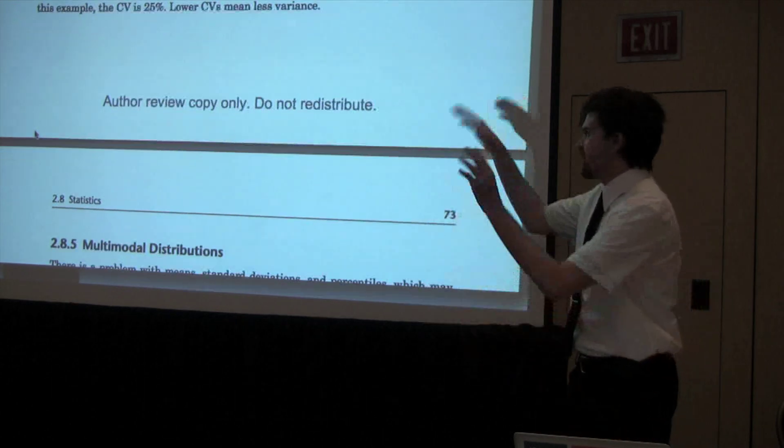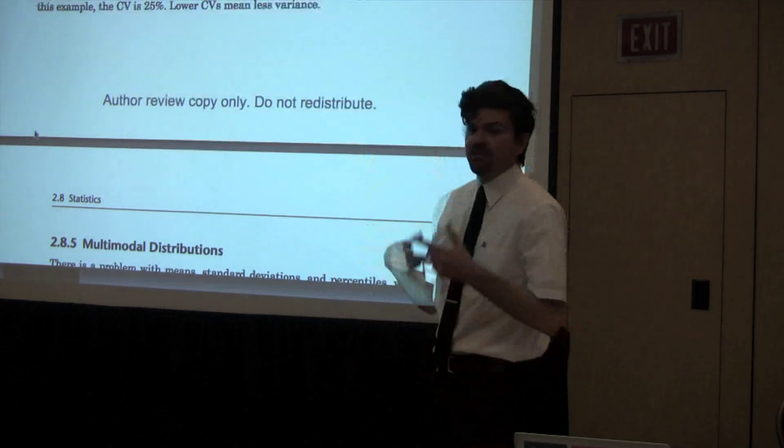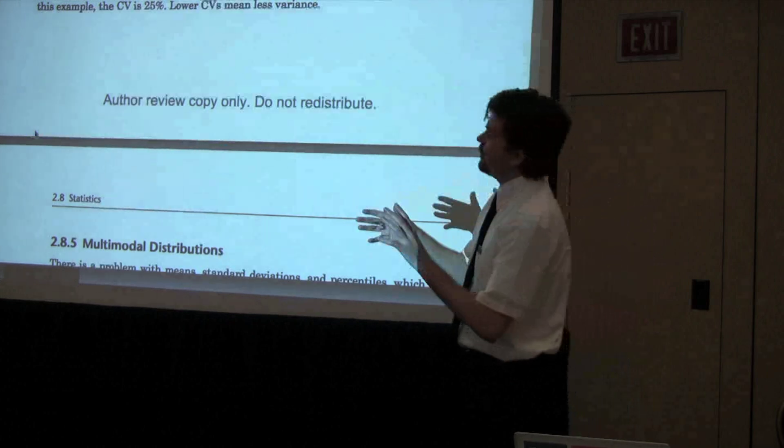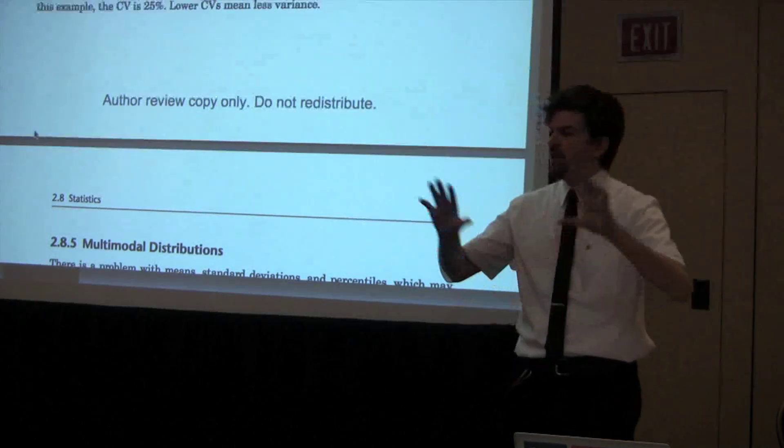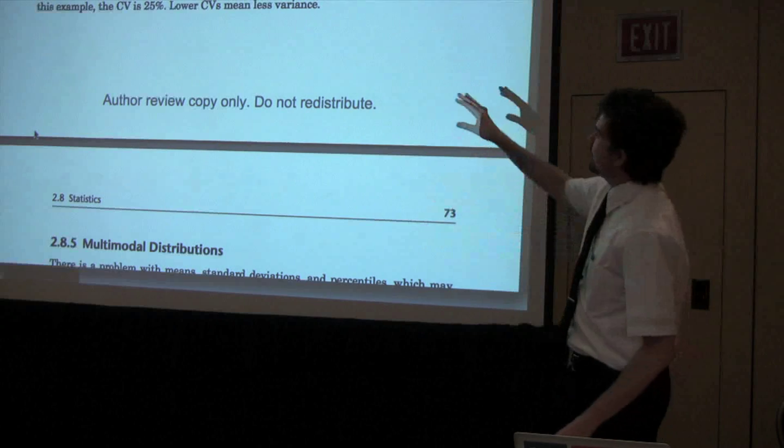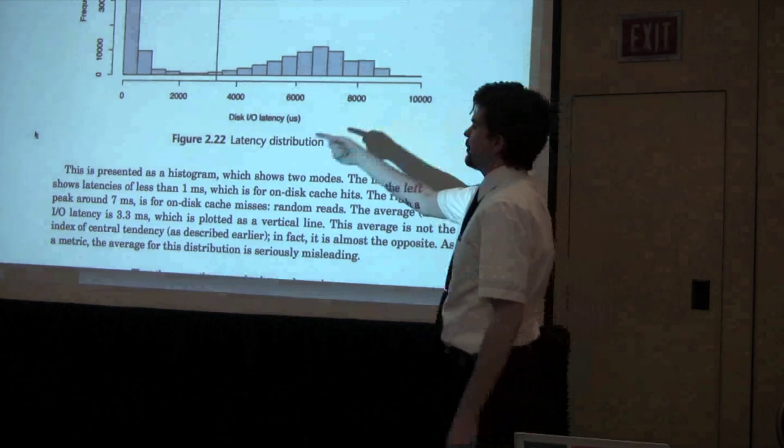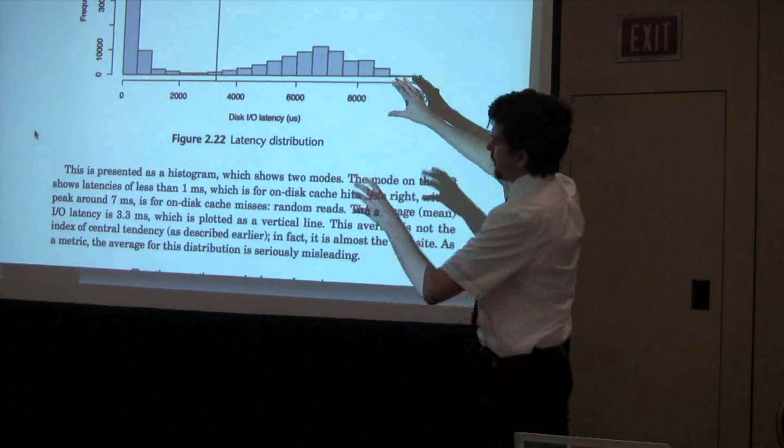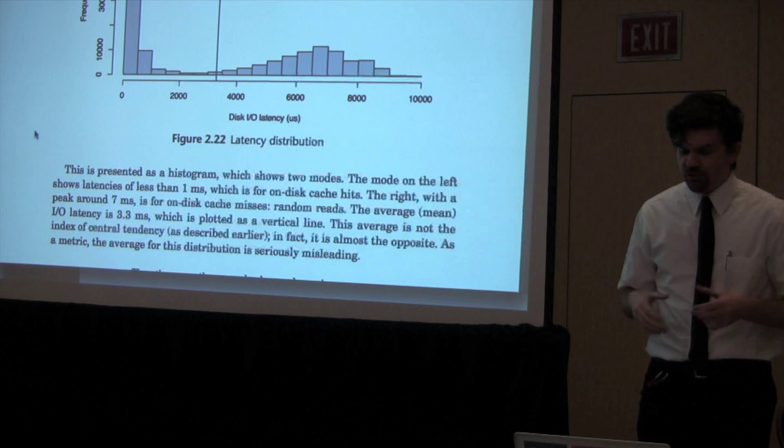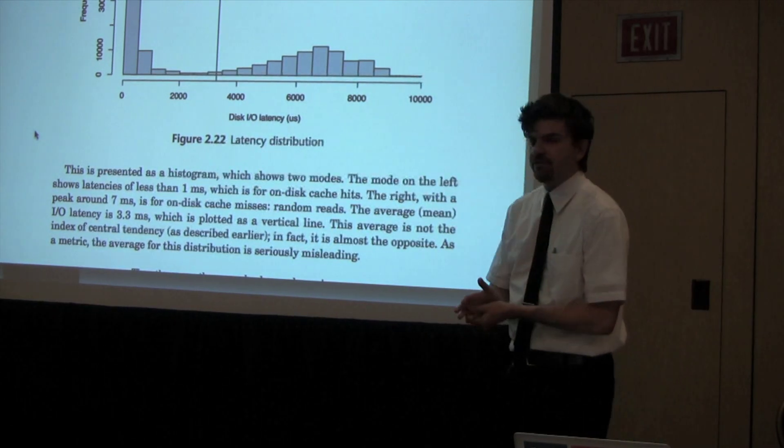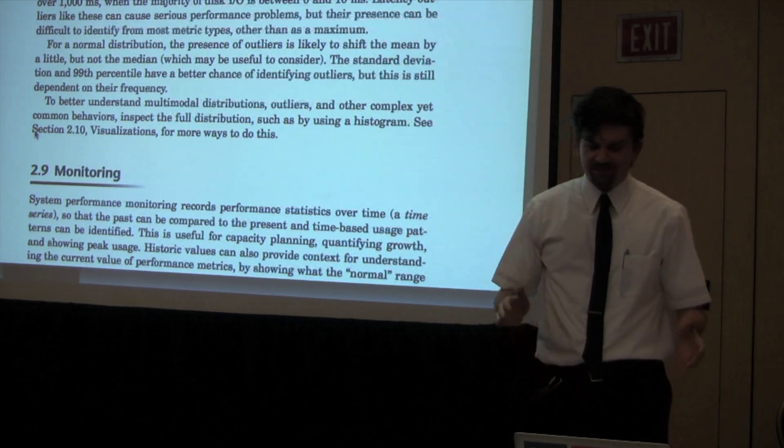Coefficient of variation can be a better statistic than the standard deviation, because the standard deviation by itself can be a little meaningless. A coefficient of variation is where I express the standard deviation divided by the mean. That way I can compare variance between entirely different data sets and turn them into a common metric. Multimodal distributions - it's important to be aware that they exist. This is a production server where I've got disk I/O latency as a histogram, and there is the average of the mean. Multimodal distributions mess up a lot of these summarizing statistics that we use.